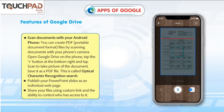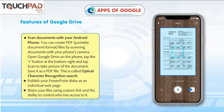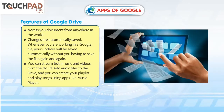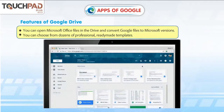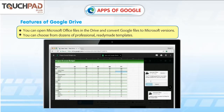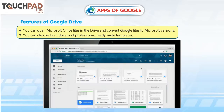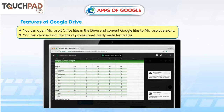This is called Optical Character Recognition Search. Publish your PowerPoint slides as an individual web page. Share your files using a custom link and control who has access to it. Access your documents from anywhere in the world. Changes are automatically saved — whenever you are working in a Google file, your updates will be saved automatically without having to save the file again and again. You can stream both music and videos from the cloud, add audio files to the drive and create your playlist. You can open Microsoft Office files in the drive and convert Google files to Microsoft versions. You can also choose from dozens of professional ready-made templates.